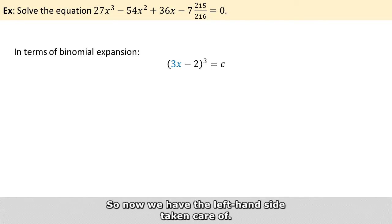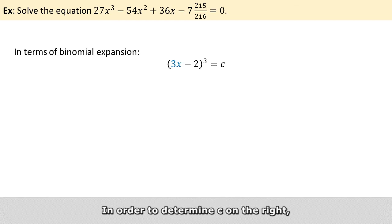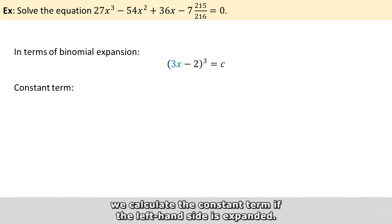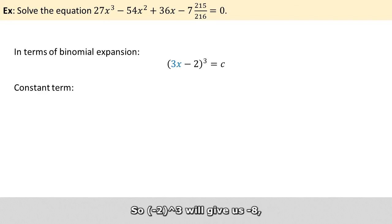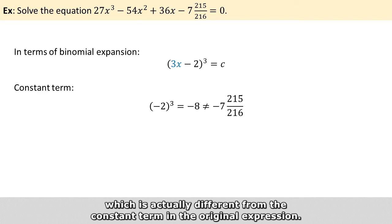So now we have the left hand side taken care of. And in order to determine c on the right, we calculate the constant term if the left hand side is expanded. So minus 2 raised to the power of 3 will give us minus 8, which is actually different from the constant term in the original expression.